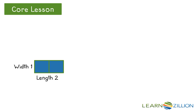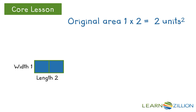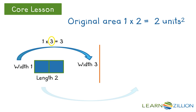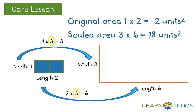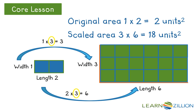Now let's generate a scale drawing with a scale factor of 3. The original drawing has dimensions of 1 unit by 2 units for length and width. When we multiply by a scale factor of 3, the scaled drawing has dimensions of 3 by 6 units. You can see by the units in the scaled drawing that the scaled area is 18 square units.